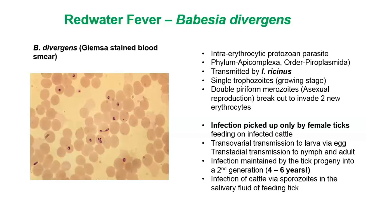Infection is picked up only by female ticks feeding on infected cattle. The parasite enters the tick, sexual reproduction takes place, and there is transovarial transmission through to the egg and then to the larva of the next generation — and through to the nymph and the adult. Infection may be maintained by tick progeny into a second generation, meaning these ticks may be infected for up to four to six years. Infection is via the sporozoites in the salivary fluid of the feeding tick.